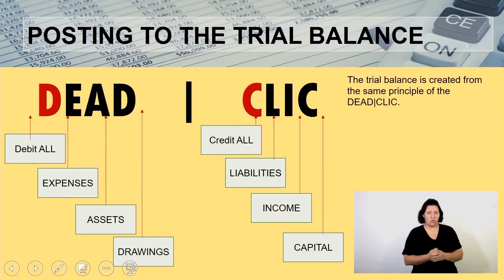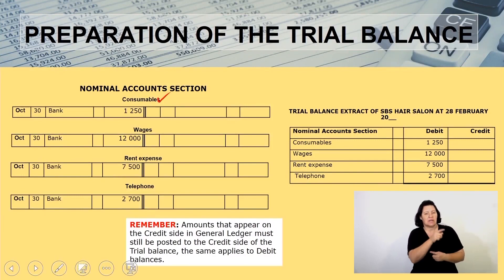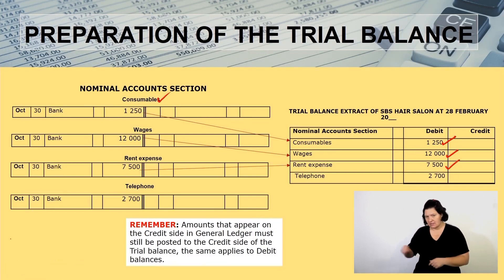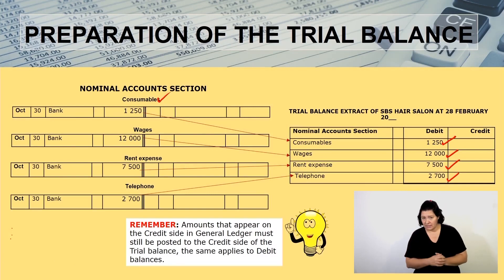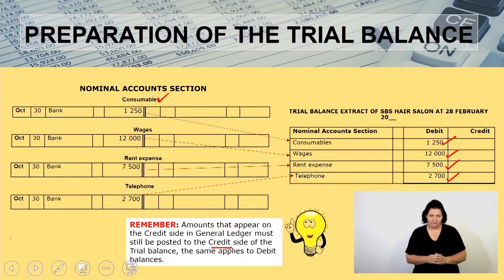When we go to the trial balance, we use the same DEAD CLIC principle. The trial balance has two sections: the balance sheet account section and the nominal account section. Starting with the nominal accounts: consumables 1,250, wages 12,000, rent expense 7,500, and telephone 2,700. Remember, amounts on the credit side in the general ledger appear on the credit side in the trial balance, and debit amounts appear on the debit side.